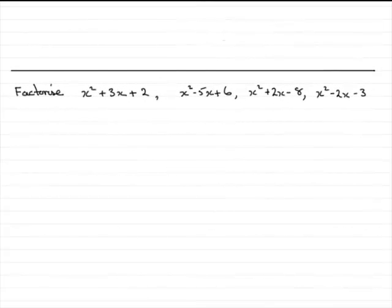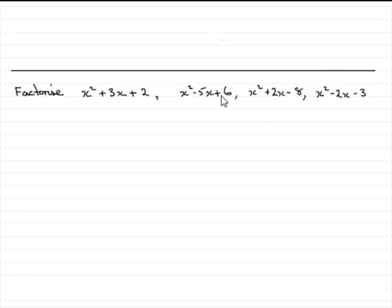In this tutorial, I want to show you how we factorize quadratic expressions like these that contain the first term, which is always x squared. You'll notice they've got an x term and a constant on the end — three terms in fact. We often call these trinomials. How do we factorize expressions like this?